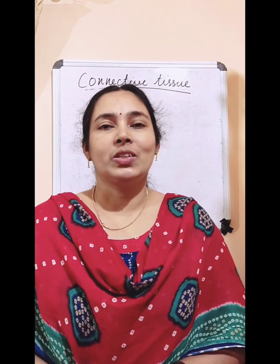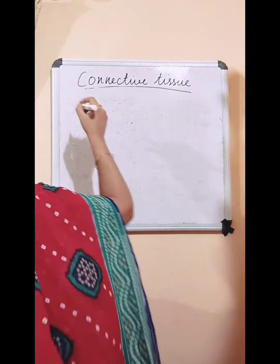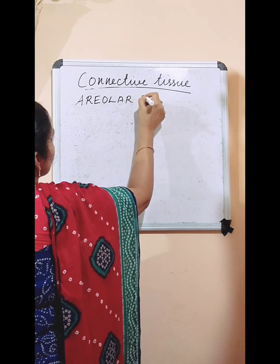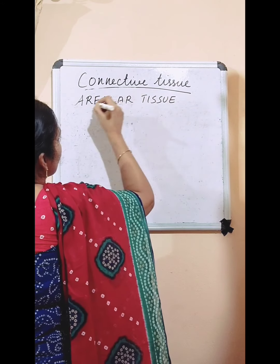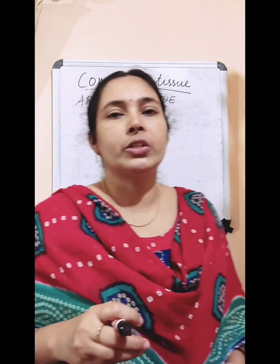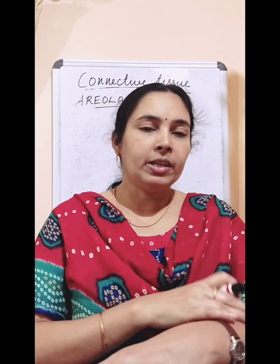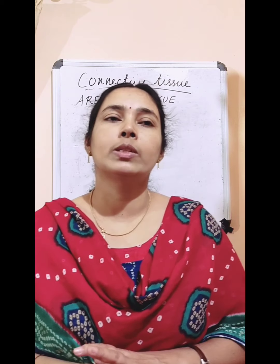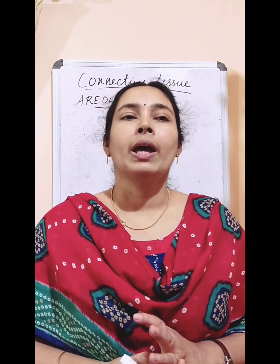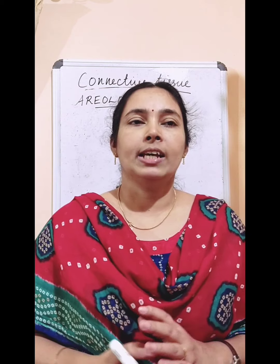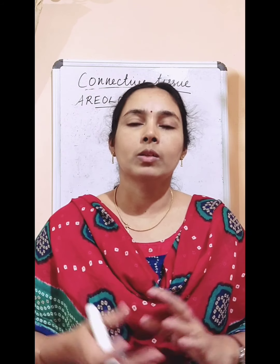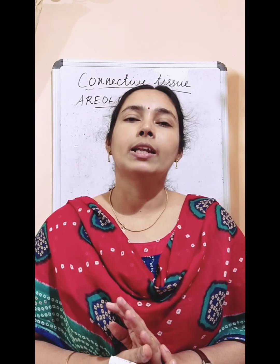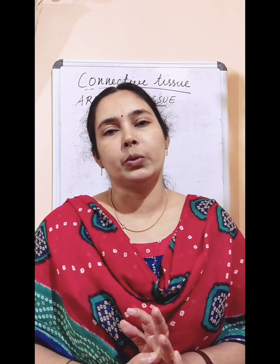The next connective tissue is areolar tissue. It is found in our body between the skin and muscles, around blood vessels and nerves, and in bone marrow. It fills the spaces inside organs, giving support to internal organs, and also helps in repair of tissues.